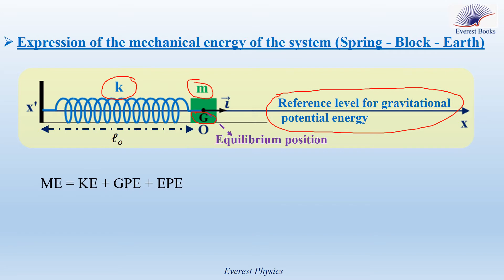So, the expression of the mechanical energy of this system is given by the kinetic energy of the block plus the gravitational potential energy of the system Earth block plus the elastic potential energy in the spring. The gravitational potential energy in this system is always zero, since G oscillates or moves in the horizontal level, so its altitude relative to the reference level remains zero.